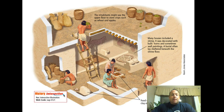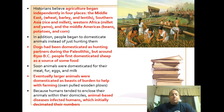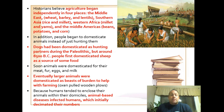One of the problems with the domestication of animals is that animal-based diseases became a problem, because people usually housed animals in or very close to their own homes. This close proximity led humans to be susceptible to those diseases. Over time, though, antibodies were built up and that became less of a problem.